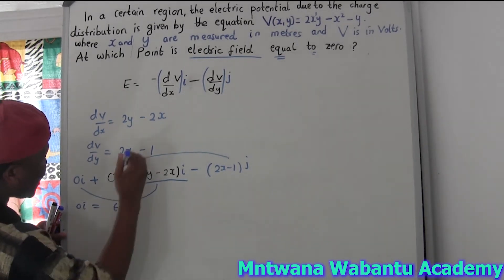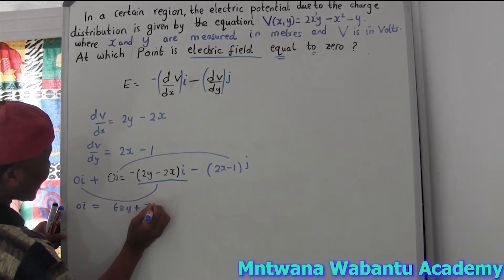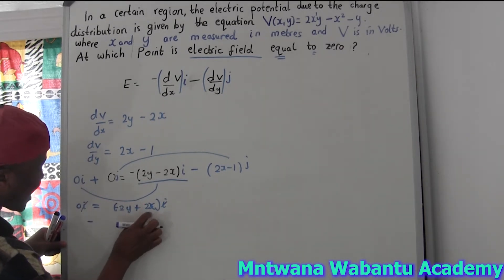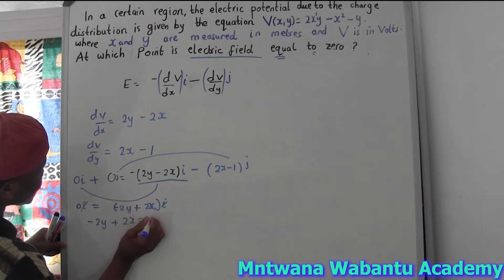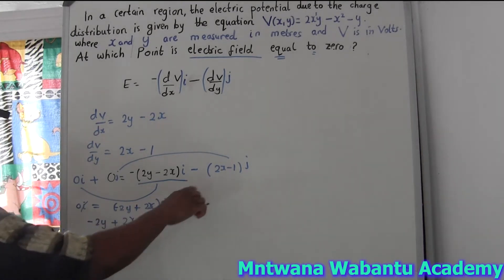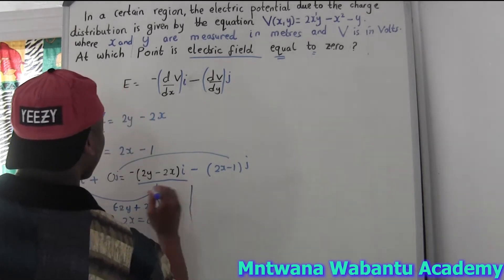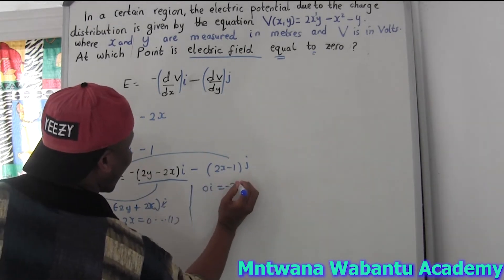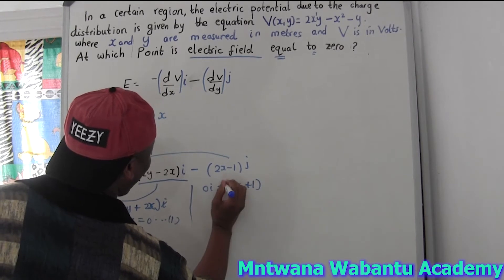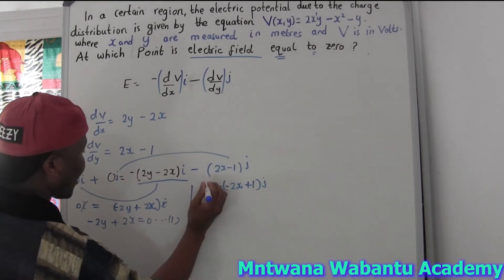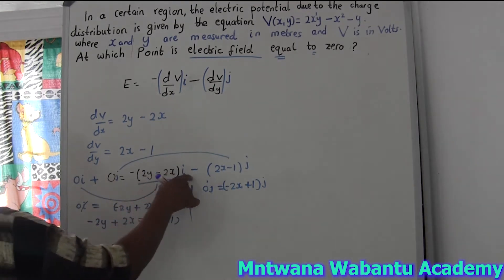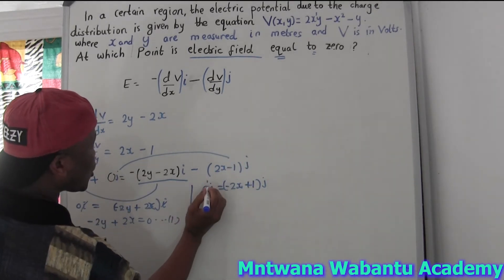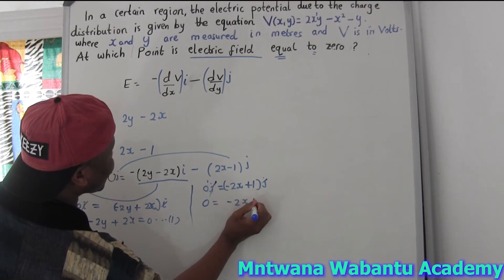By comparison of the î components: 0î = -(2y + 2x)î, so the î terms cancel and we get 2y + 2x = 0. Call this equation one. By comparison of the ĵ components: 0ĵ = -(2x - 1)ĵ, so the ĵ terms cancel and we get 0 = -2x + 1.